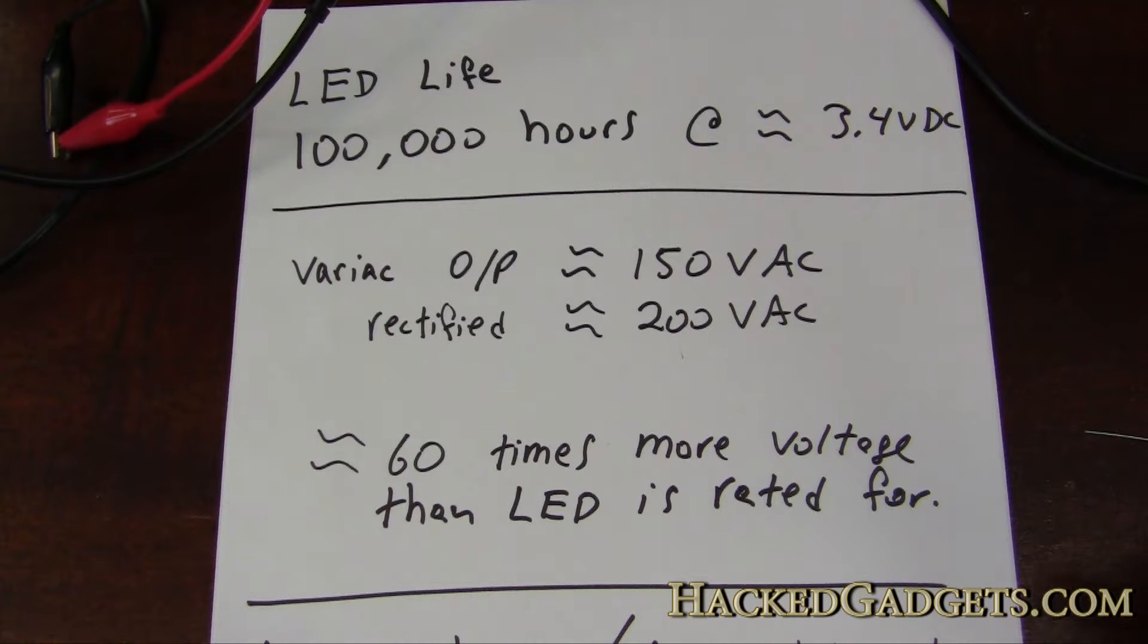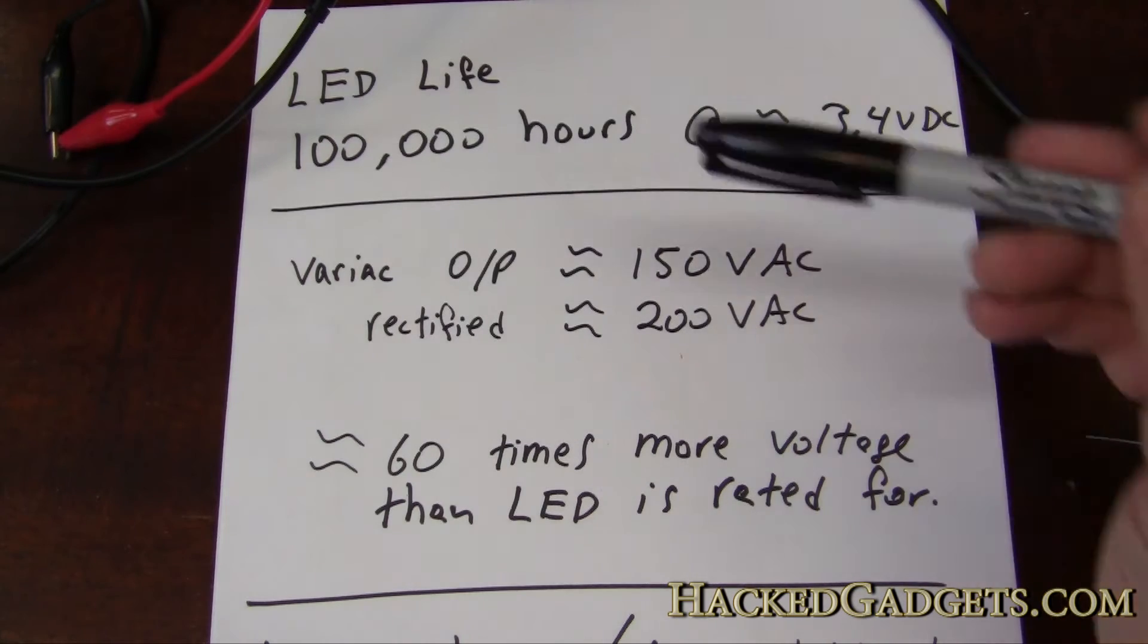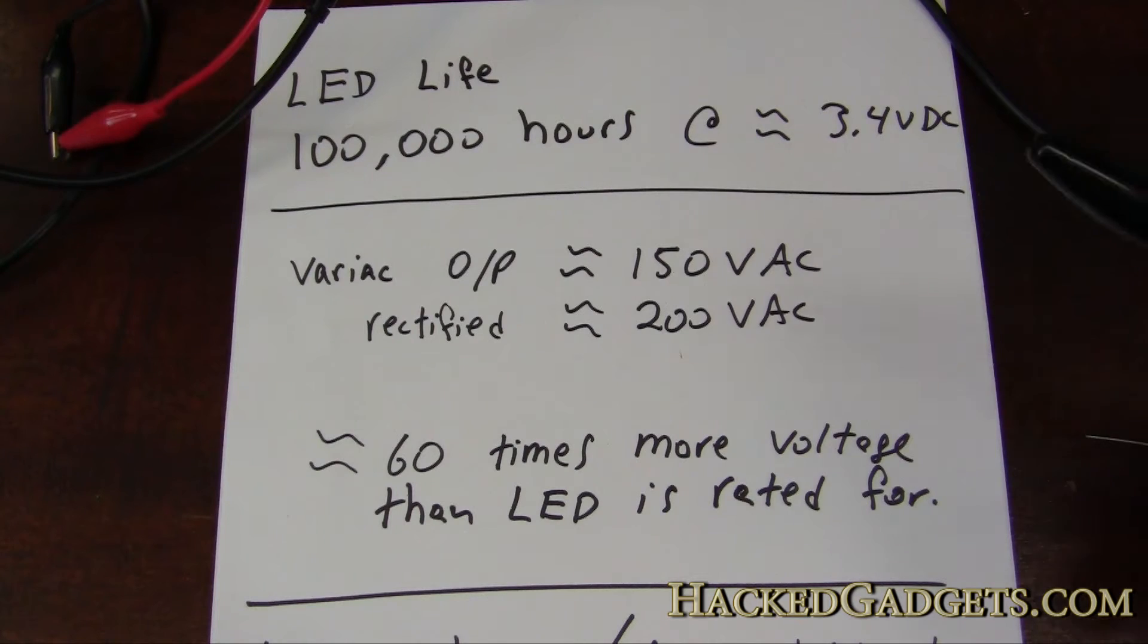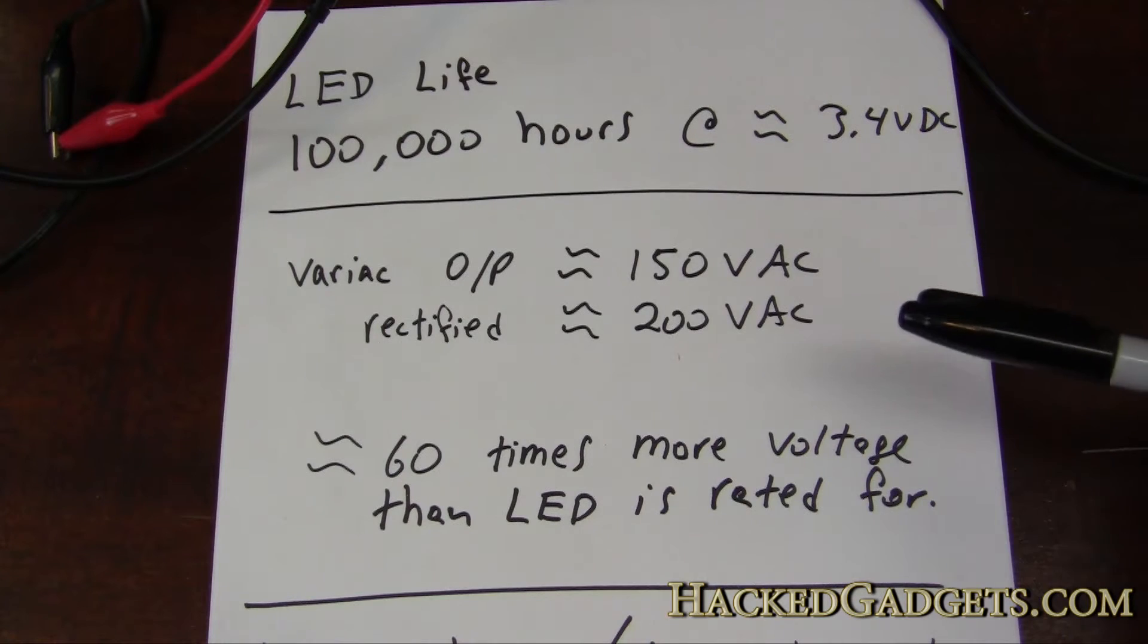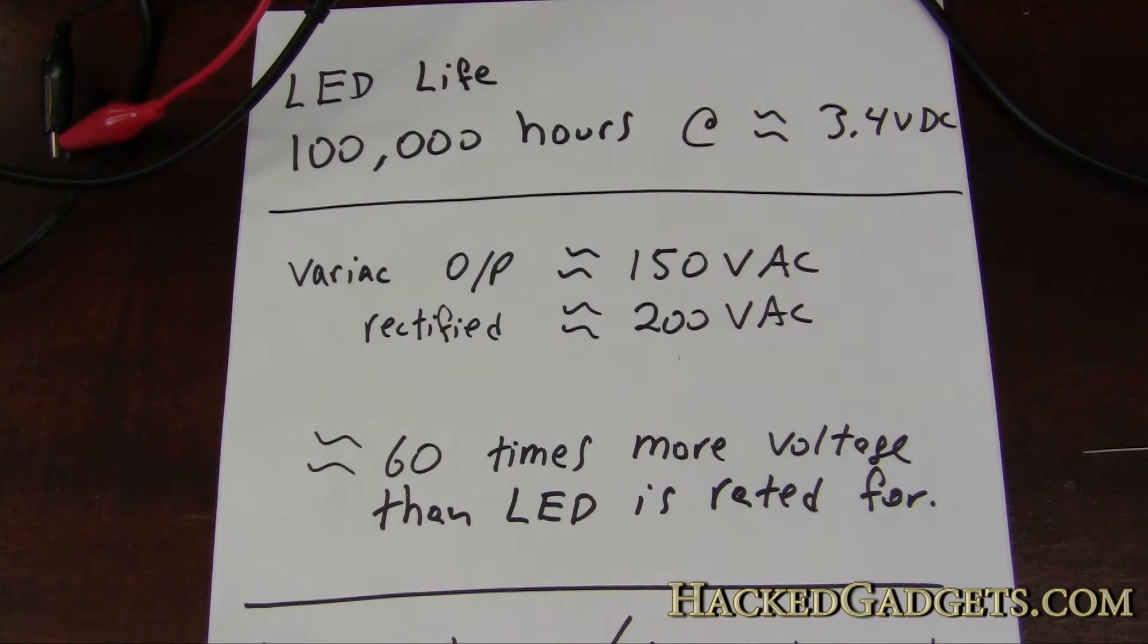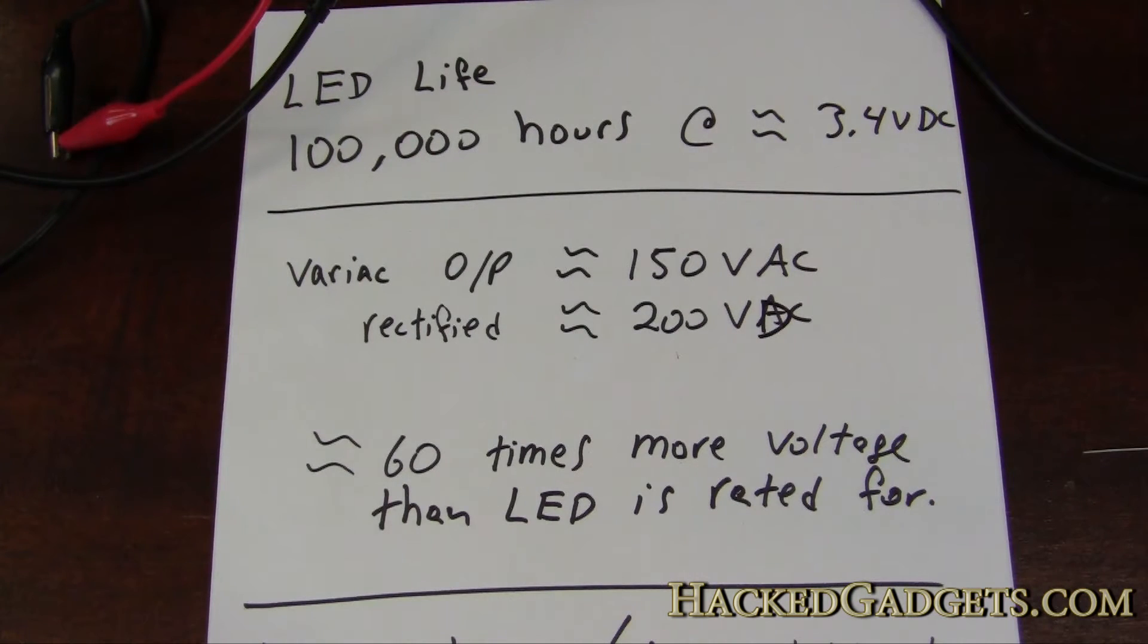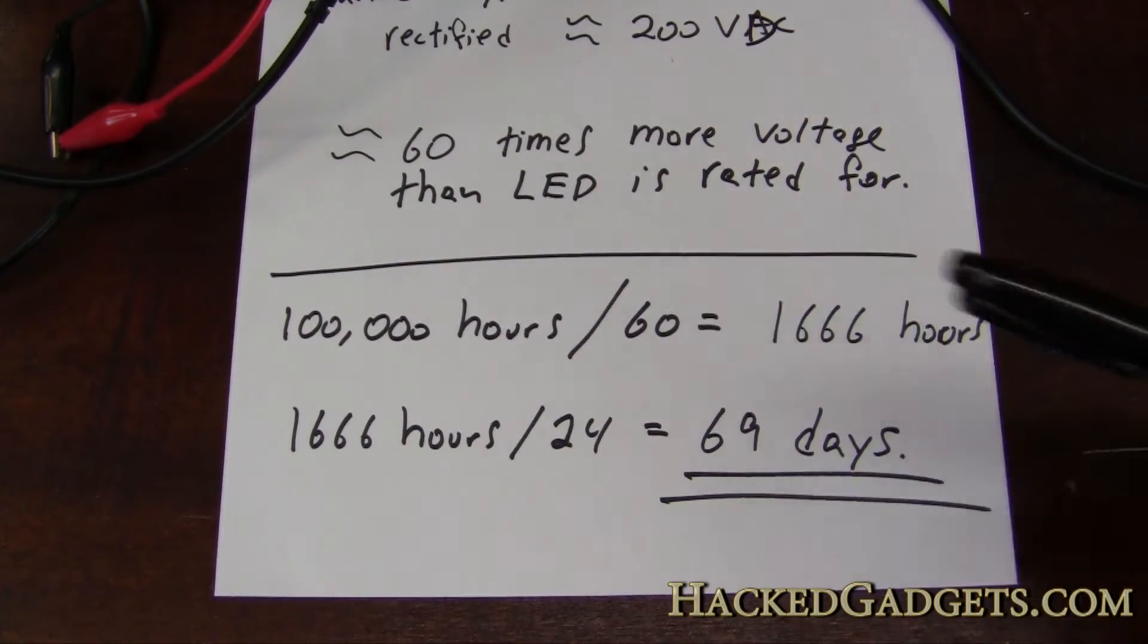Okay, so everything is just calculatable with electronics. We know the LED life is about a hundred thousand hours and we know the voltage now is 3.4 volts DC. We're going to hook this thing up to a Variac. The Variac has an output of about 150 volts AC and when rectified we're just going to call that about 200 volts DC when rectified. So that's about 60 times more than this LED is rated for. No big deal.